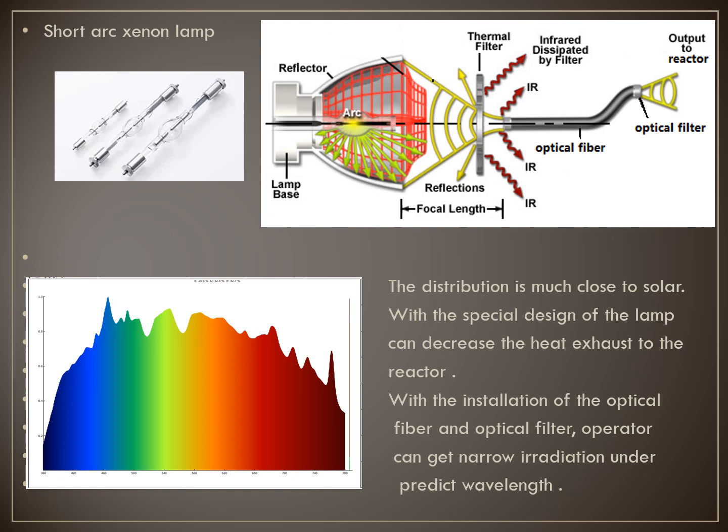as shown here, we can decrease the heat exhaust by wind cooling. When the irradiation leads into the reactor, it no longer contains huge heat anymore. So we don't need any cooling system to run the reaction at room temperature with the irradiation provided under this condition.